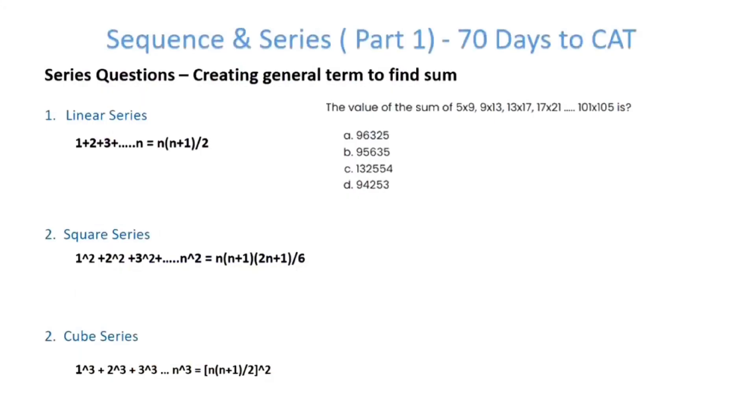Hi friends, welcome to Sequence and Series Part 1. Let's learn about some key series. For example, linear series: if we add all the natural numbers from 1 to n, the sum is n(n+1)/2. Very simply, if I add all the numbers till 10, what is the number? 10×11÷2, which is 55.